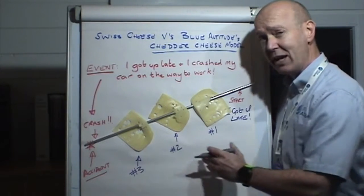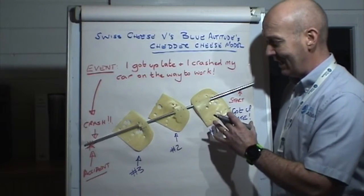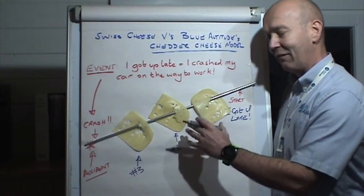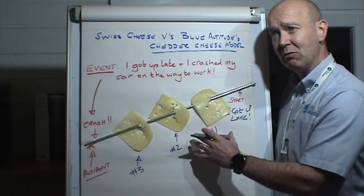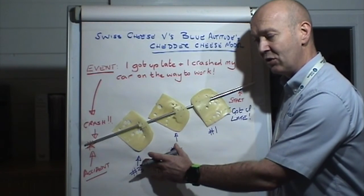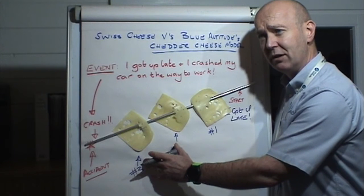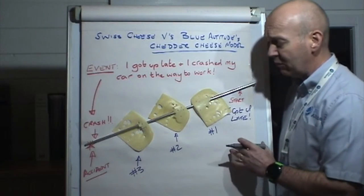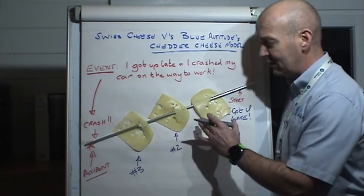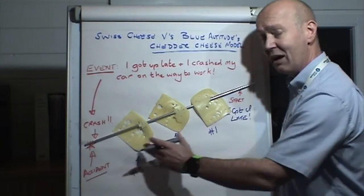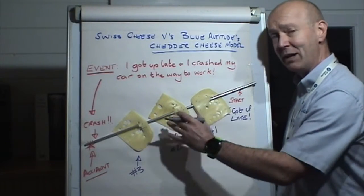Number three: I'm under pressure and distracted, and I need to make up time because I left late, so I tend to take a shortcut — meaning I speed in my vehicle. You can see how all three contributing factors combined cause the accident, and hence all the holes are aligned.